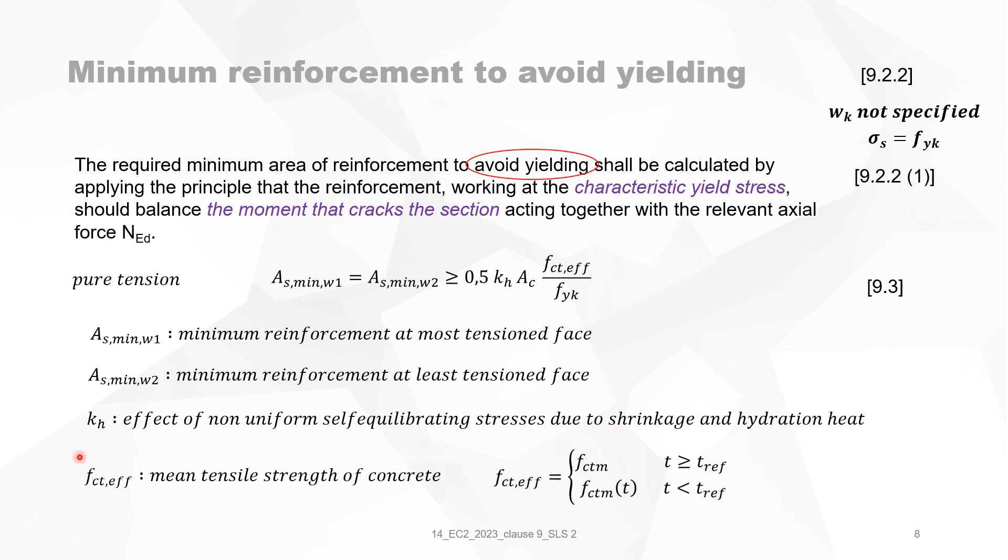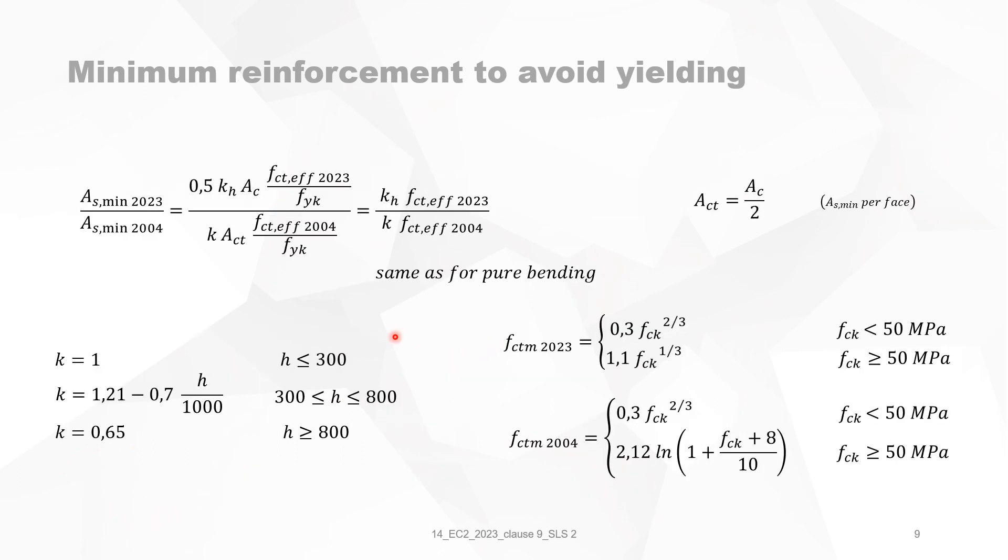Now we can make again the proportionality of the minimum reinforcement for tension to avoid yielding for the two codes. And we end up with exactly the same formula as we had for bending. So same conclusions are valid here. For ease of use, I repeated the formulation of the factor K and of f_ctm in the two codes.